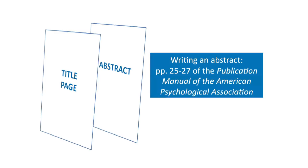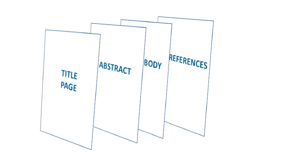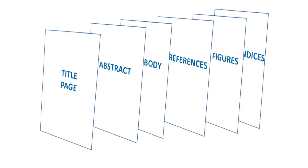After the title page is the abstract. An abstract is a brief, usually 150 to 250 word summary of your paper, and should go on a separate page. Follow any instructions given by your instructor on how to write your abstract, or see pages 25 to 27 of the APA manual. The abstract is followed by the main body of your paper, then by your reference list, followed by any figures, and finally any appendices you may have.